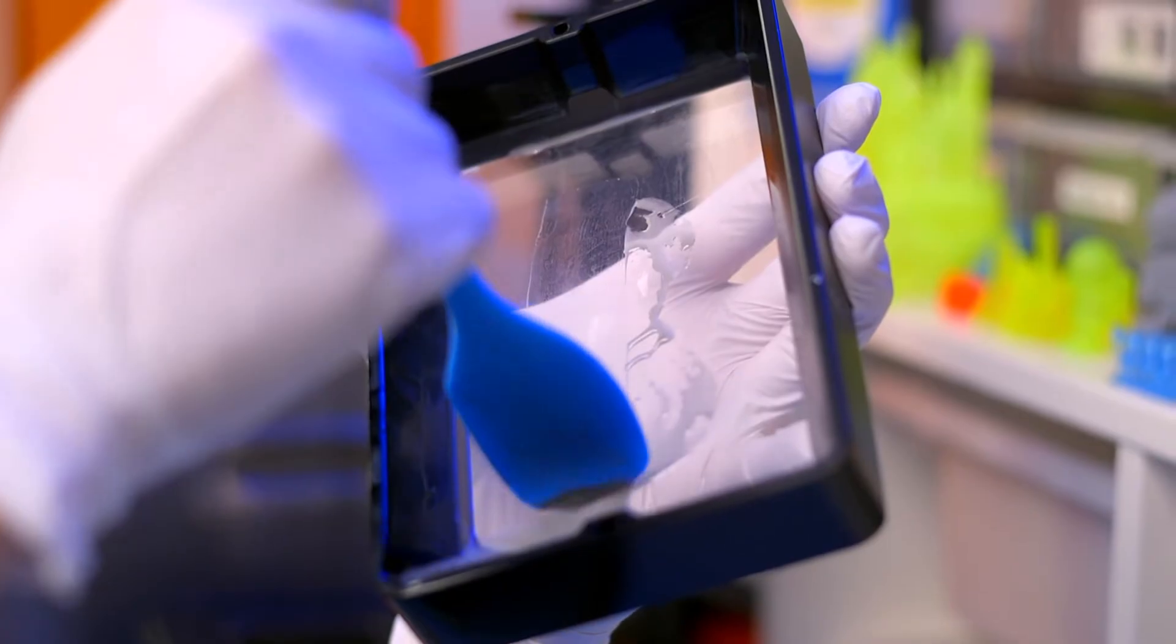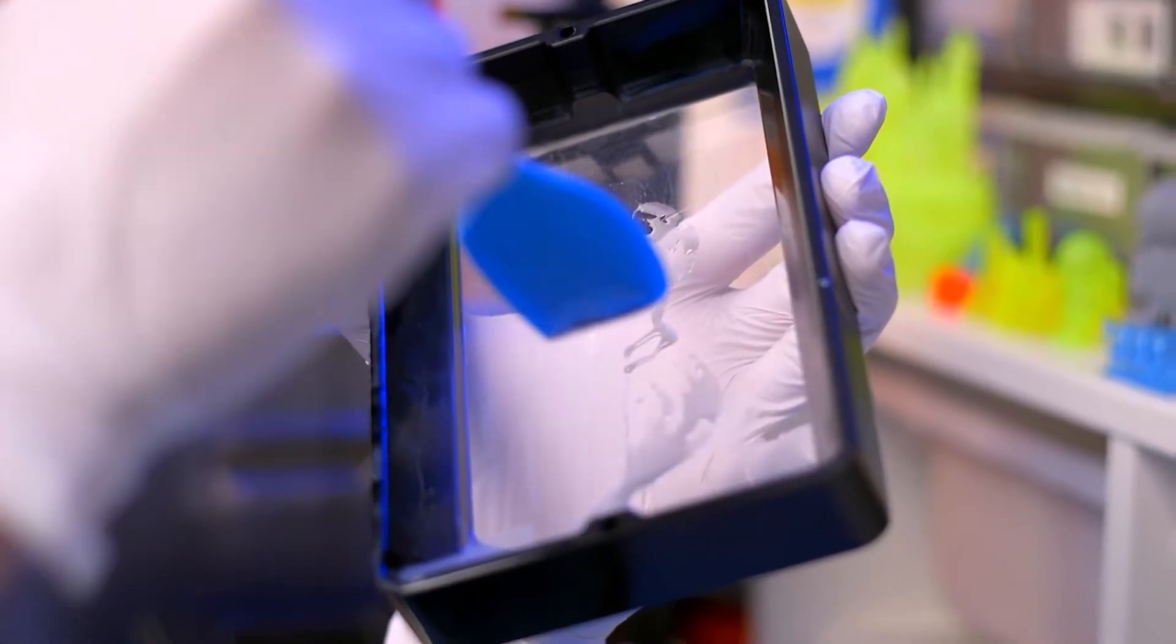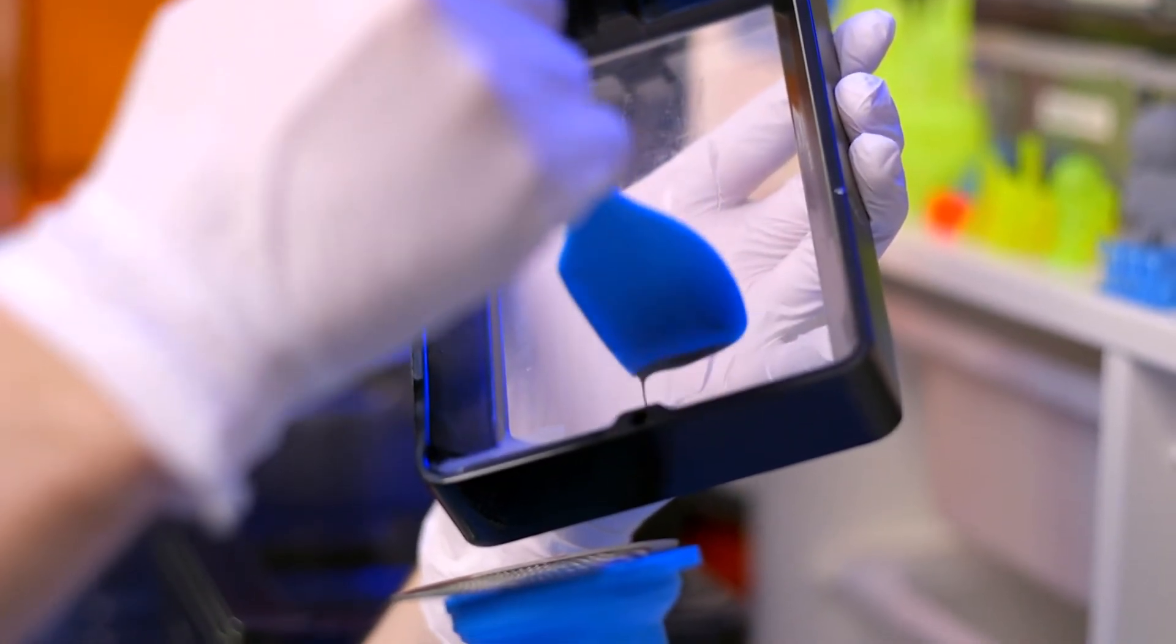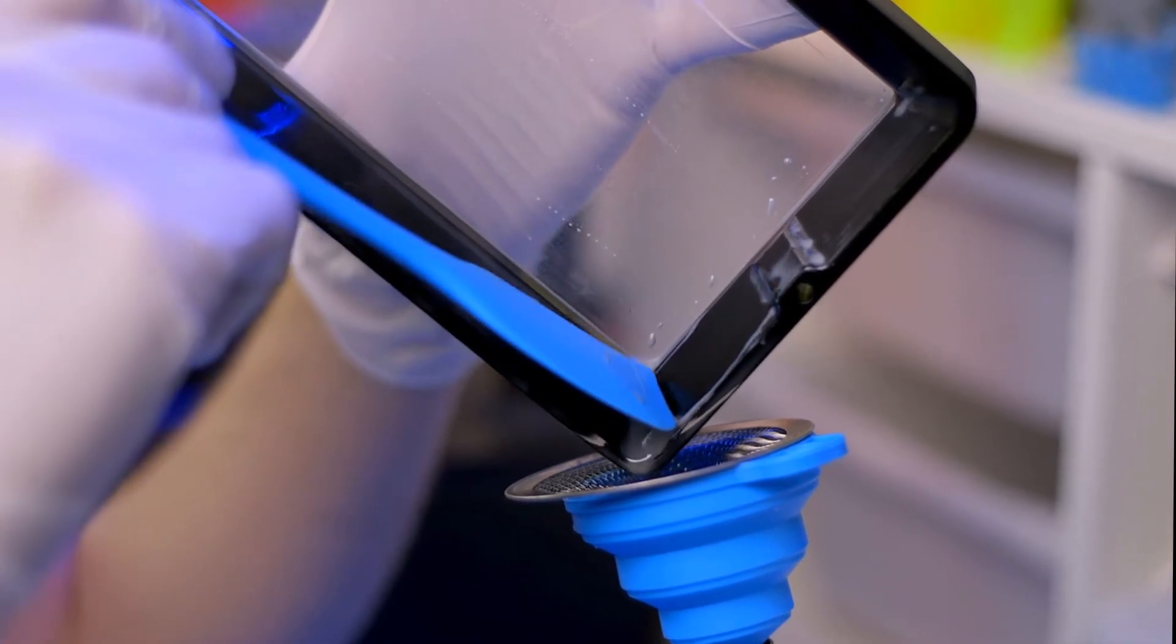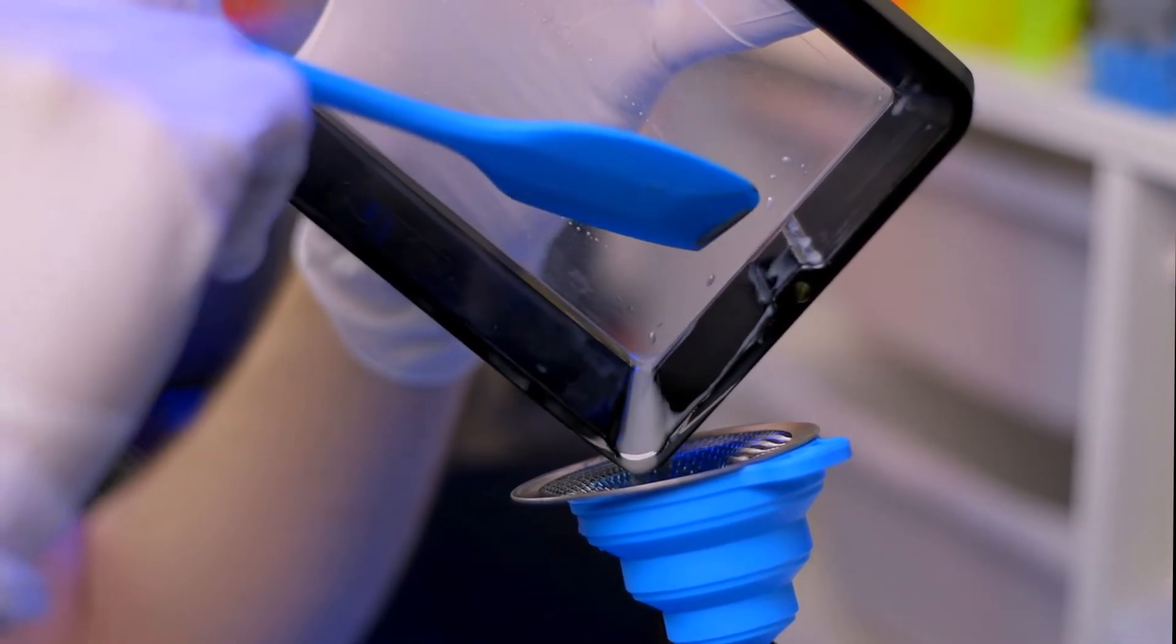Step 11: Once the vat is mostly empty, use the rubber squeegee to move the rest of the resin to the side with the pour spout. Alternate between squeegeeing and pouring until most of the resin is in the container.